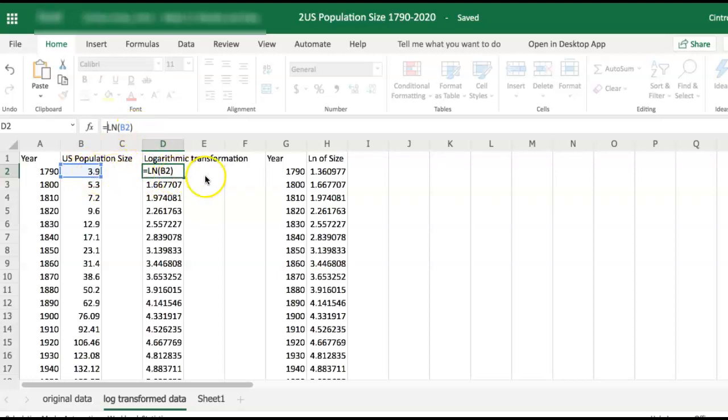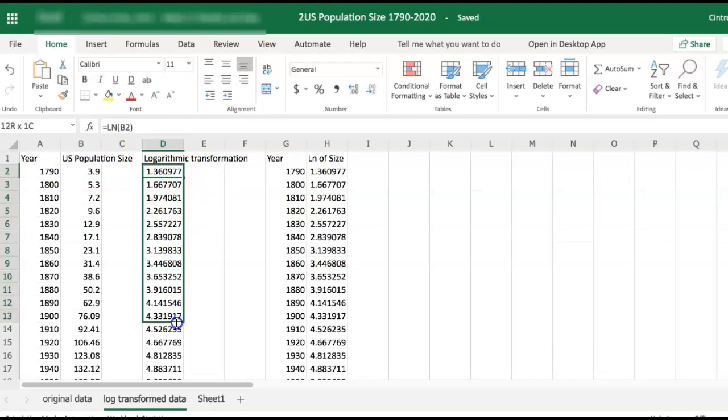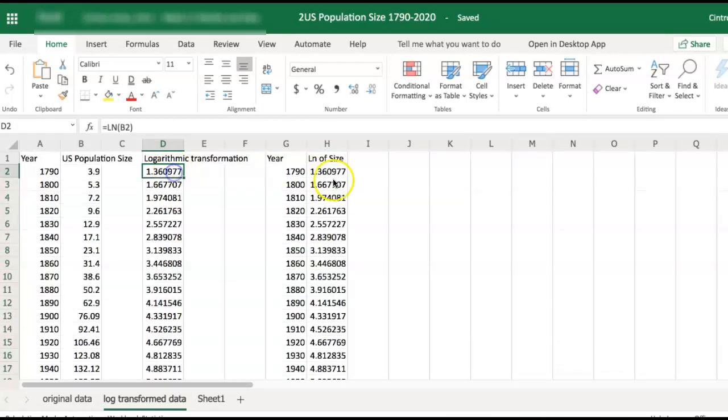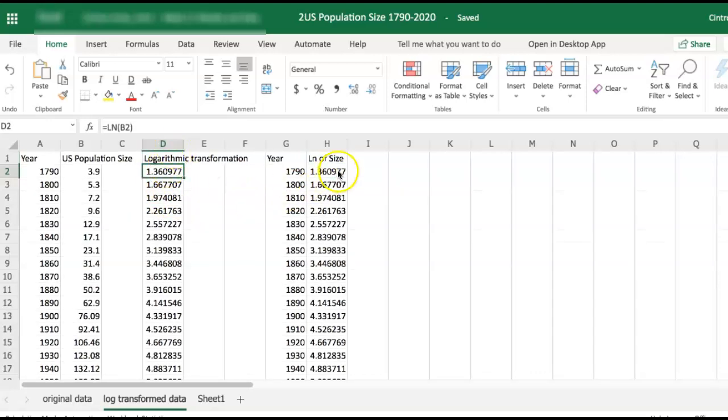Once we do that, we hit enter and can propagate that function throughout all the corresponding values. I had already done that ahead of time. Then I copied the values of year into a new column, and I copied again the values that were computed in column D.